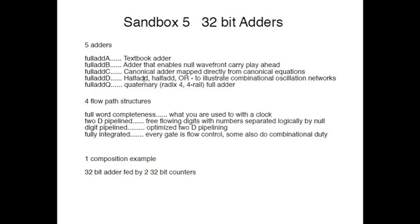Full Add D is a half-add, half-add, OR version of the full adder. This makes a fairly significant combinational circuit and we'll use it to illustrate how we turn combinational circuits into oscillation networks. Full Add Q is the quaternary full adder, and that's in LDD also — it's derived in LDD.